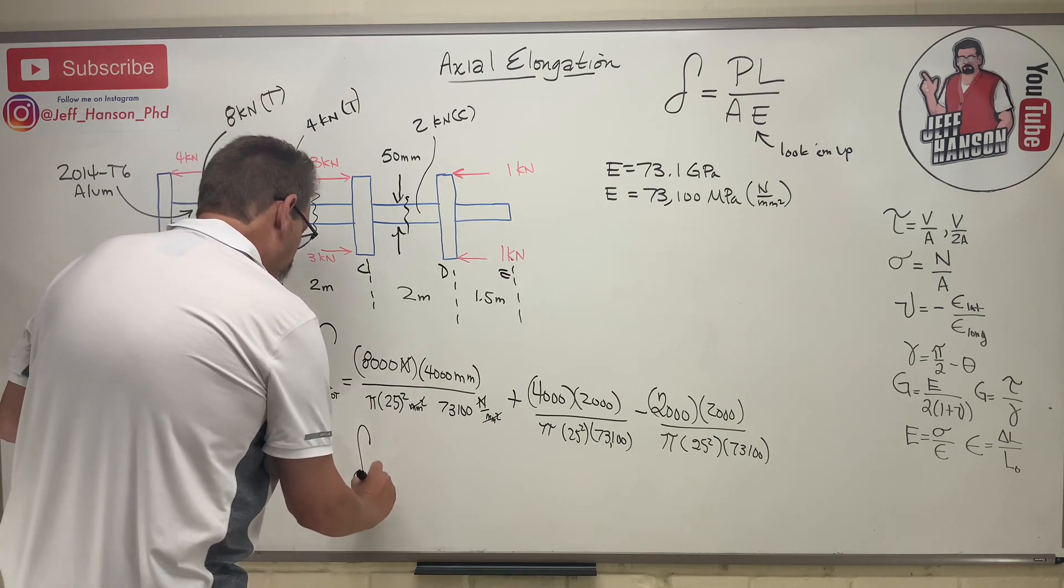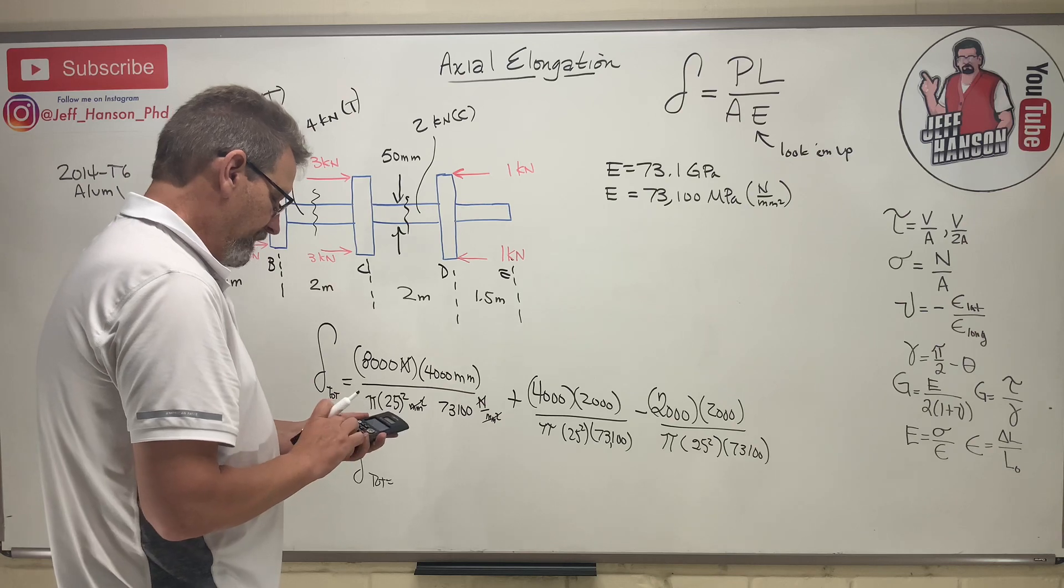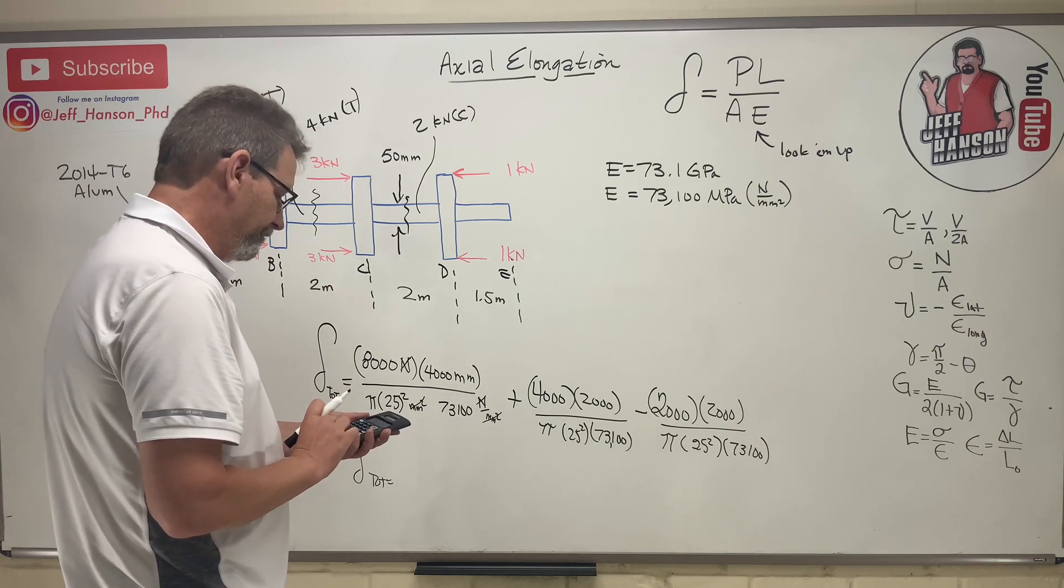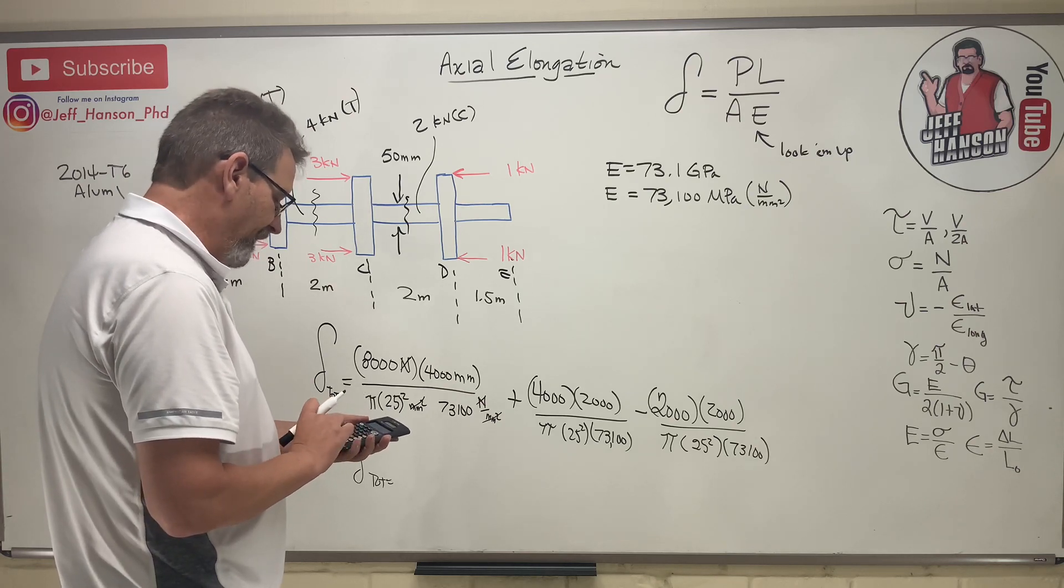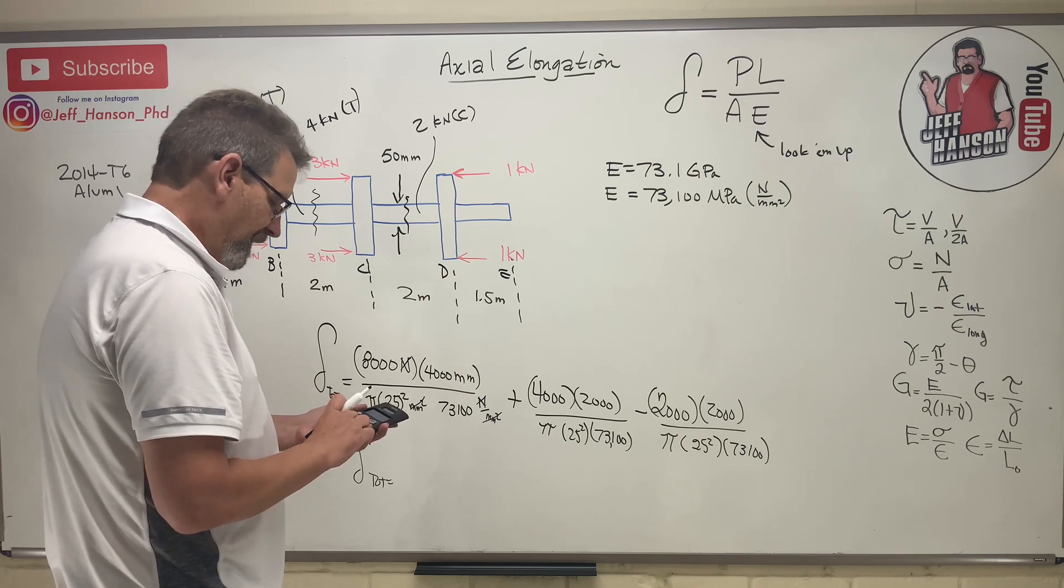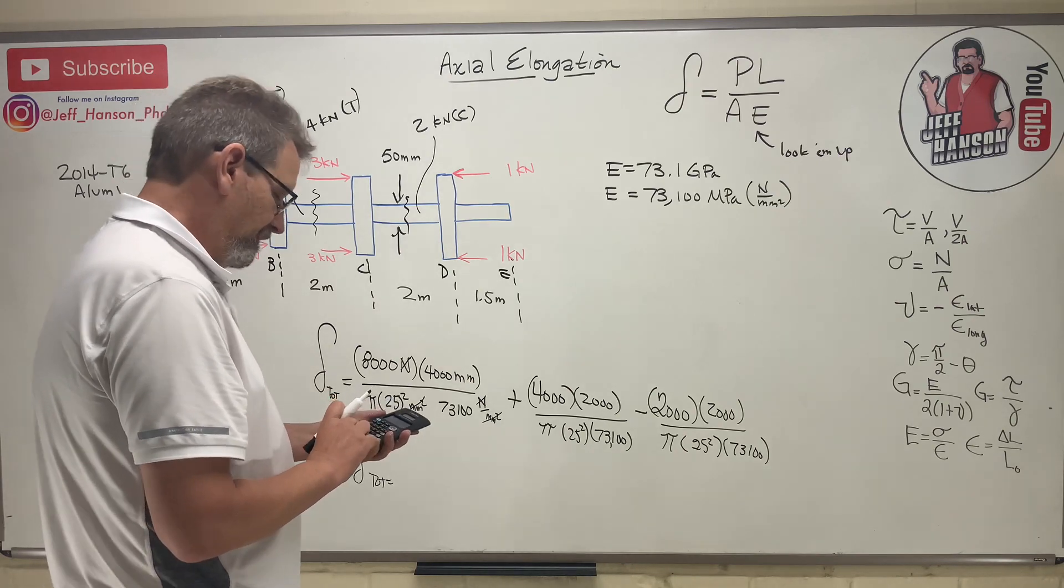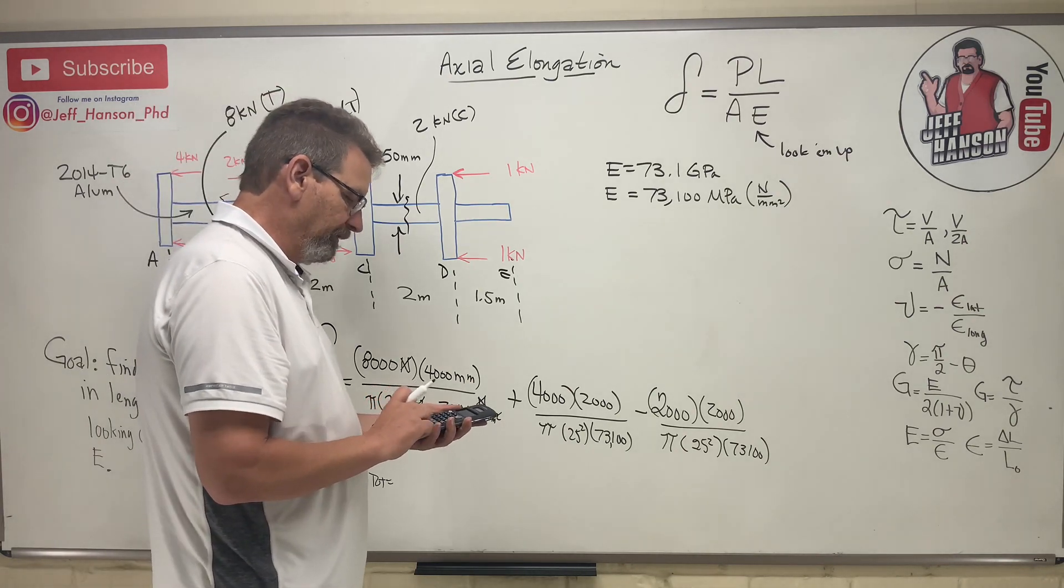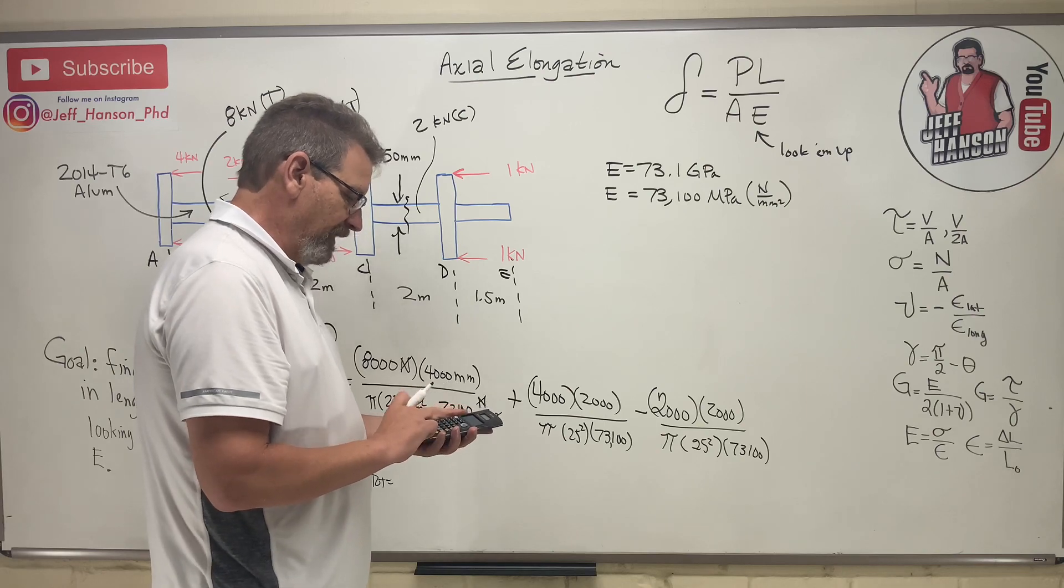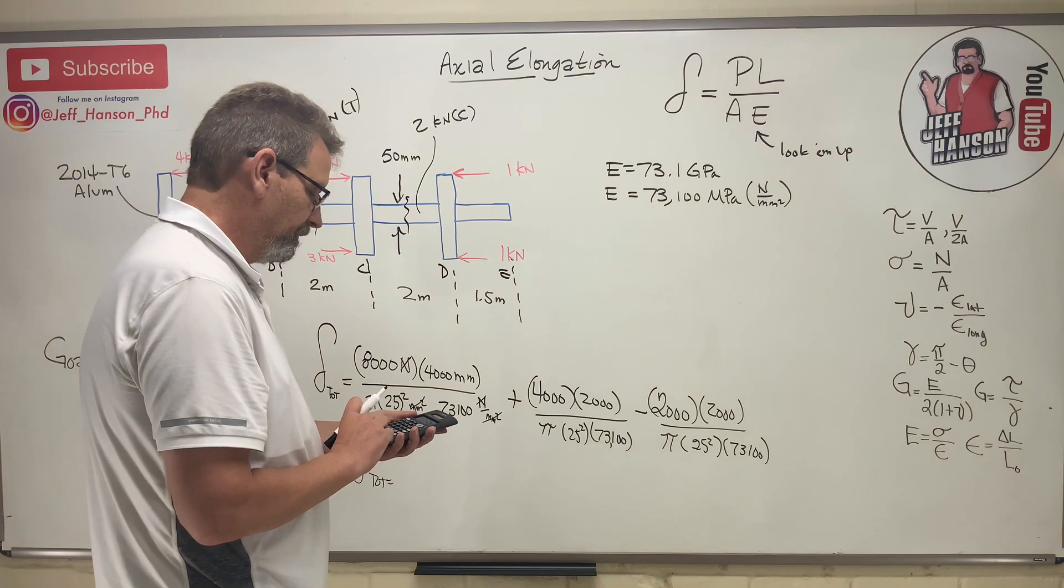Here we go. So delta total is equal to - clear - 8,000 times 4,000 plus 4,000 times 2,000 minus 2,000 times 2,000 equals. All right, a big number.